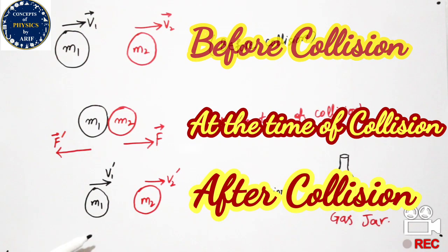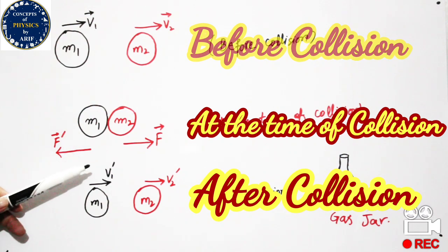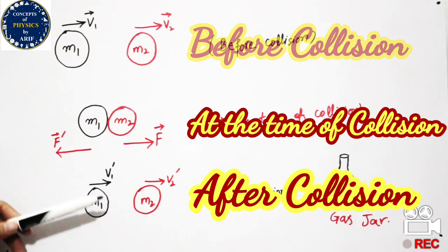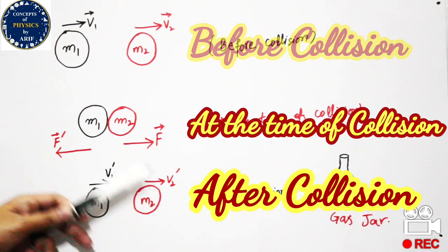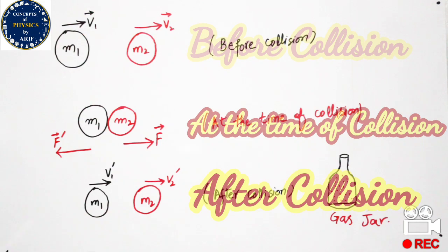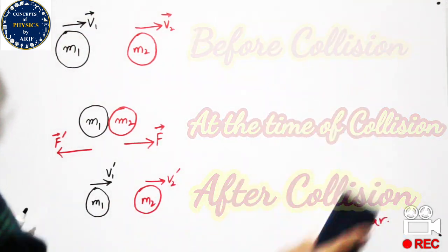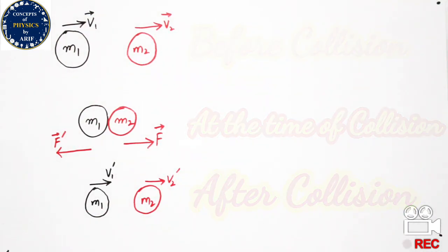After collision, the velocity of m1 becomes v1 prime and the velocity of m2 becomes v2 prime. This is the condition after collision. We need to prove that the momentum before collision and the momentum after collision is constant.